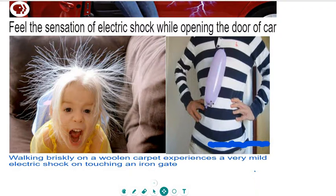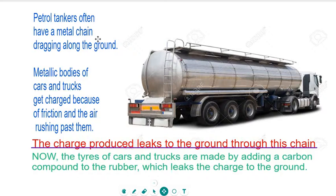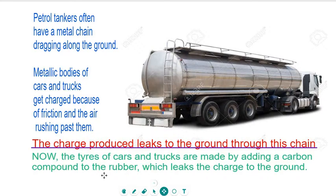You can also observe that petrol tankers have a metal chain dragging along the ground. Metal bodies of cars and trucks get charged because of friction and air rushing past them. The charge produced leaks to the ground through this chain hanging at the back or front of the tanker. These days, tires of cars and trucks are made by adding a carbon compound to the rubber, which leaks the charge to the ground very easily.